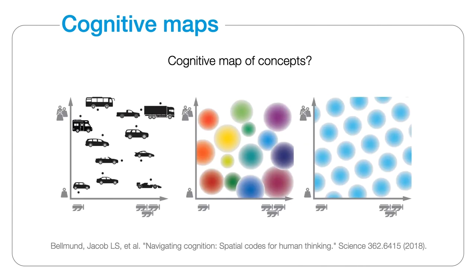Recent experiments involving humans performing non-spatial tasks have found neuroactivity of hexagonal symmetry in brain regions similar to those activated during spatial navigation. It is hypothesized that the population code of place in grid cells may have a more general usage for mapping continuous features beyond just space.